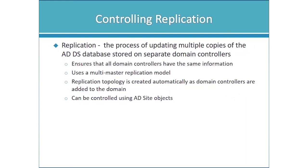Replication is the process of keeping multiple copies of the Active Directory database stored on separate domain controllers up to date. Having a multi-master scenario is very important because changes can be made to any domain controller — and so we need to ensure all domain controllers have the same information. The replication topology gets created automatically as domain controllers are added to the domain; technically there's nothing you have to do to make replication happen, but we can use Active Directory site objects to control that process.